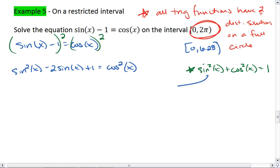This gives me sin²(x) - 2sin(x) + 1 = cos²(x). I can then use my Pythagorean identity and replace cos²(x) with 1 - sin²(x). This leaves the left side alone. And now this is looking better. I have everything in terms of sine, and I have both a squared and a first power sine. So now we're going to solve it like a quadratic.